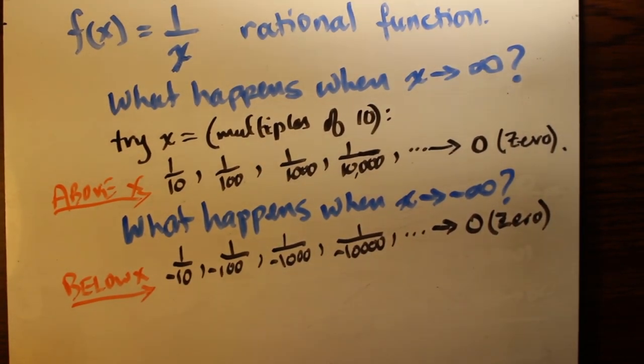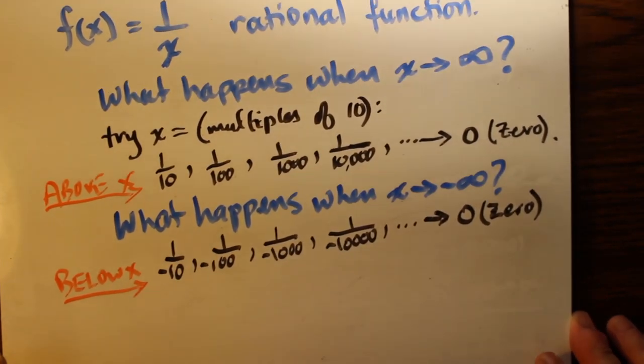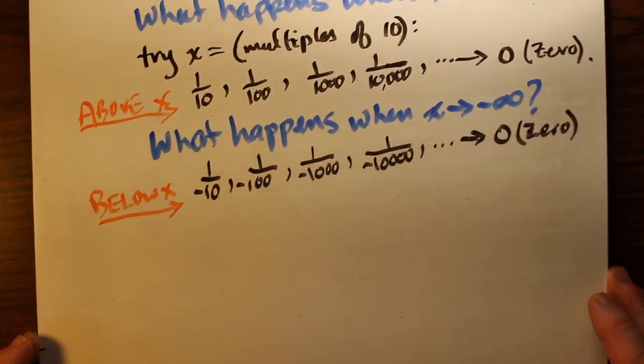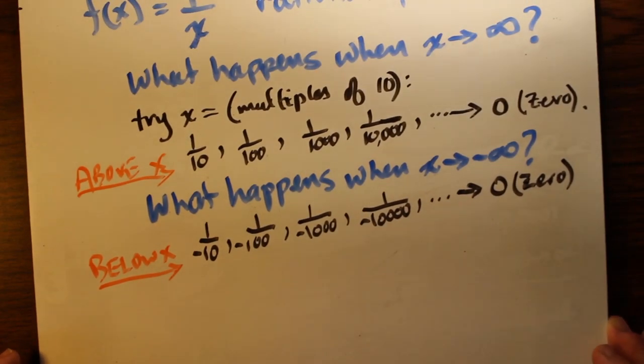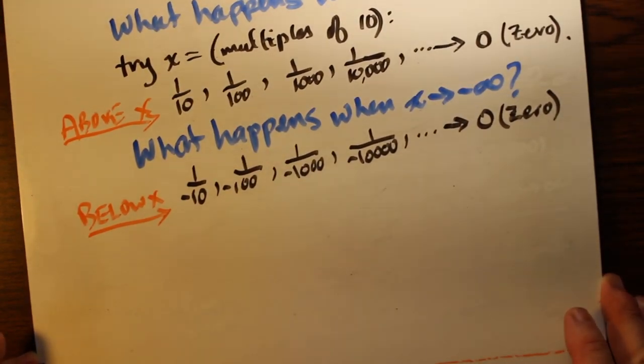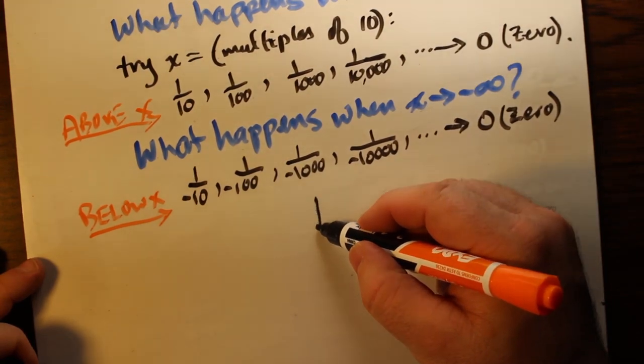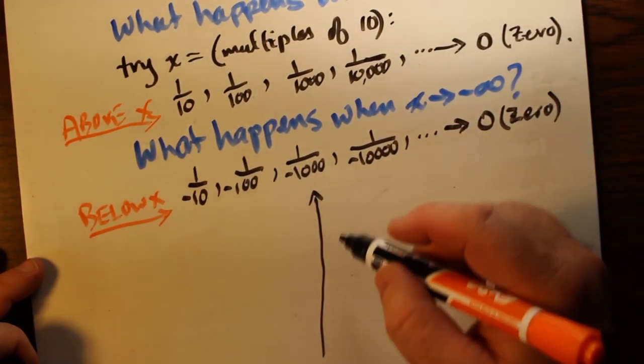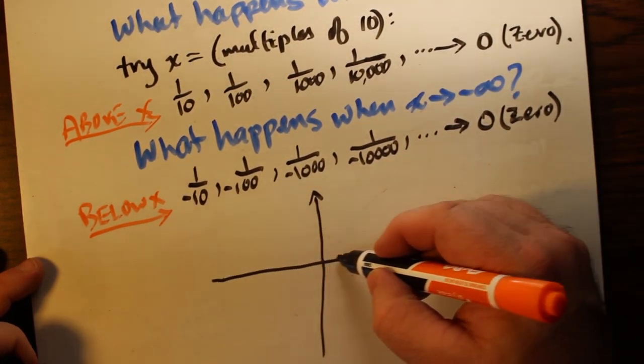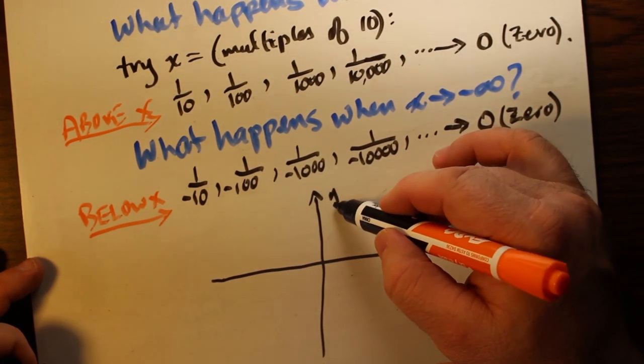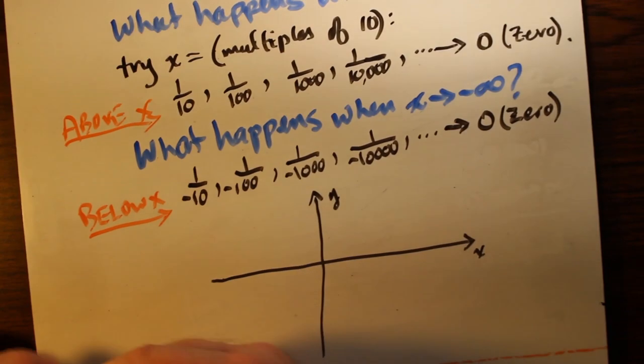What happens when x approaches negative infinity? We try the same trick again except for negative numbers. We end up getting close to 1 over negative 10,000, and we're still getting close to zero but in a different way—we're getting close to zero from below the x-axis. Either way, the x-axis itself is also a horizontal asymptote.